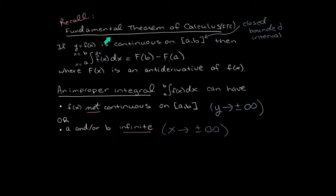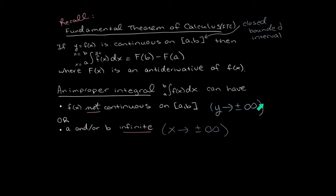An improper integral does not follow the format of the fundamental theorem of calculus. What's going to go wrong? For one thing, perhaps the function is not continuous on the interval. This could potentially happen if there was a vertical asymptote in between x equals a and x equals b. Remember that vertical asymptotes have the y values or the height of the function going to infinity. That is one possible way that we're going to break the conditions on the fundamental theorem of calculus.